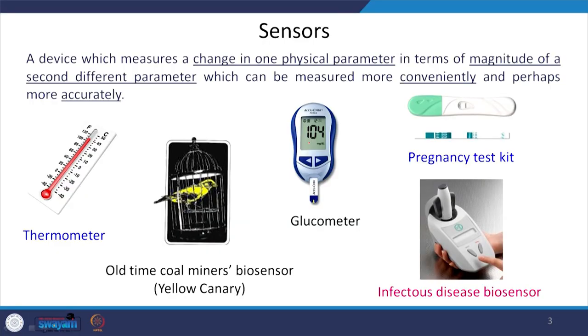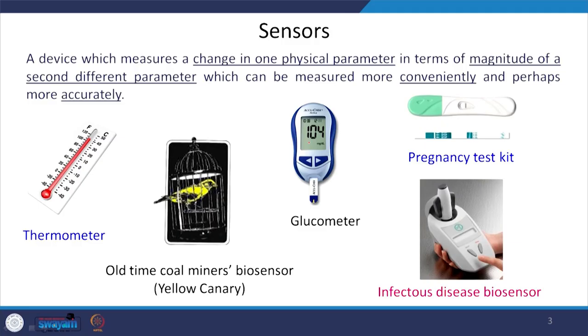For example, take this thermometer. What it does is measure temperature, but in terms of what? In terms of the length of this column. If you increase the temperature of the room by 2 degrees centigrade, you hardly feel any change, but this device can tell you how much change in temperature occurred by measuring the change in length. It measures length, which can be done more conveniently and accurately, and then translates it into temperature.